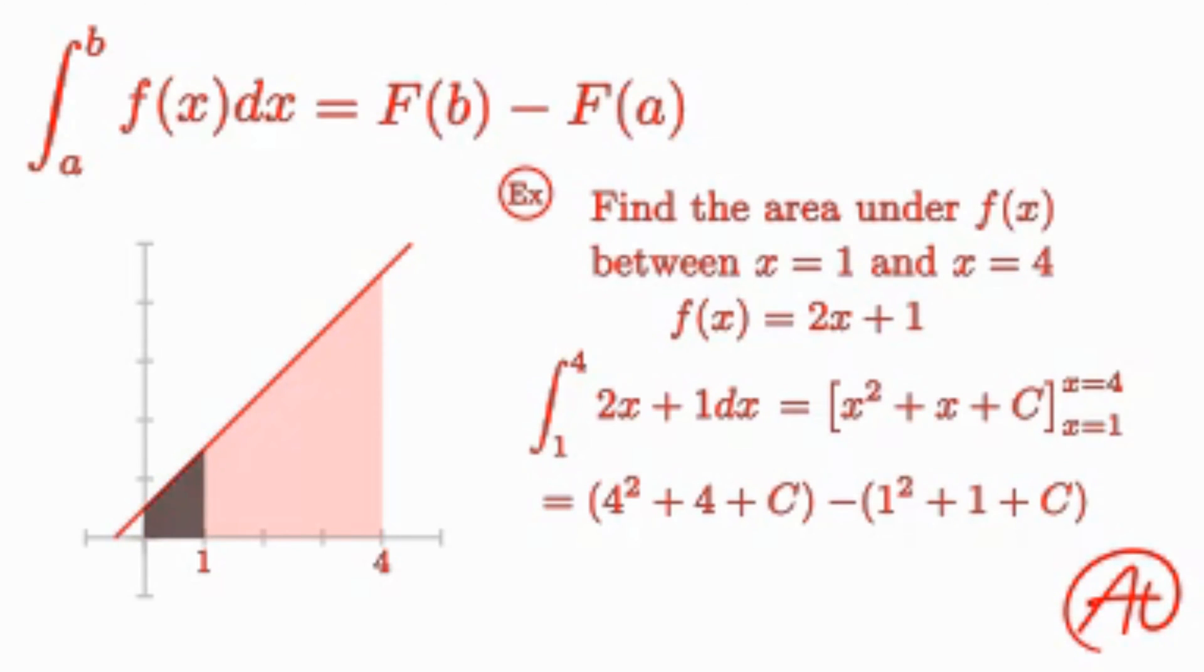Now all that's left is some arithmetic. But hang on, what do we do with these c values? We don't know what those are. Fortunately, if we were to multiply in this negative sign, we would find that we have a plus c and minus c in our expression, which perfectly cancel each other out. And this is the case for all definite integrals that you do. When you are doing any definite integral with bounds like this, you don't have to worry about that pesky plus c anymore.